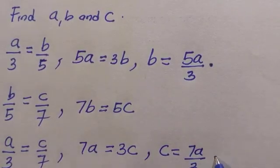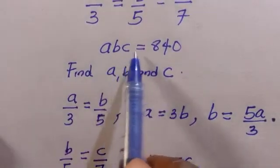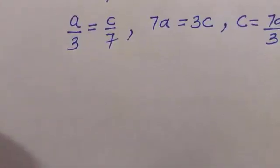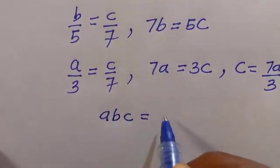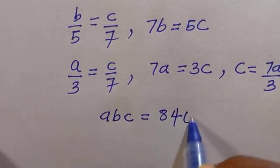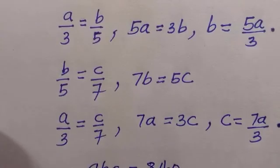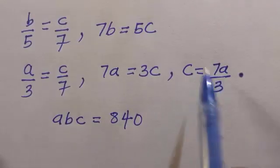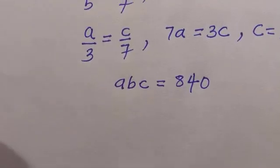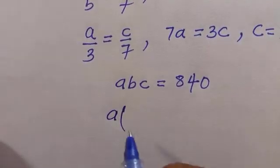For this, we're going to substitute these two expressions into abc equals 840. So let's write this thing out. We have abc equals 840. Anywhere I see b, I'm going to replace it with 5a divided by 3, and anywhere I see c, I will replace it with 7a divided by 3. Therefore we have a times 5a divided by 3 times 7a divided by 3 equals 840.